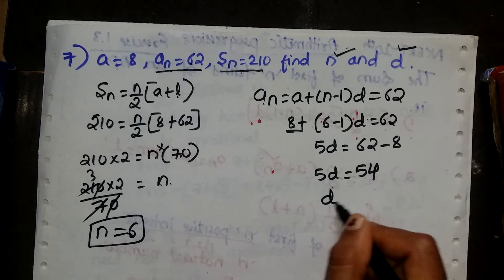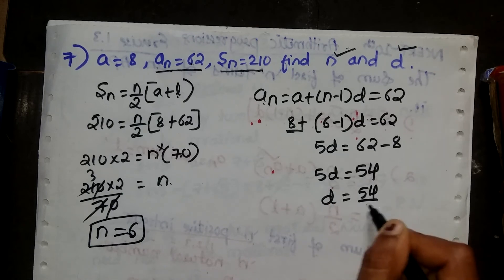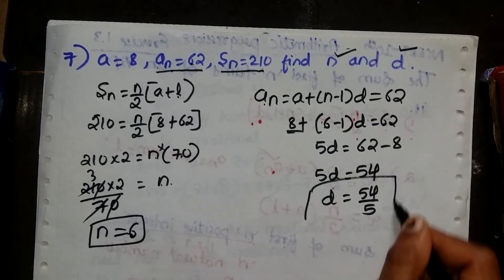Then d equals 54 divided by 5. This is the value of d.